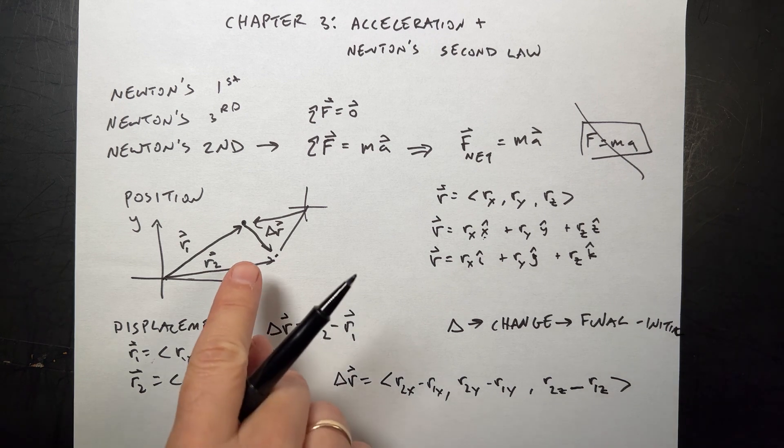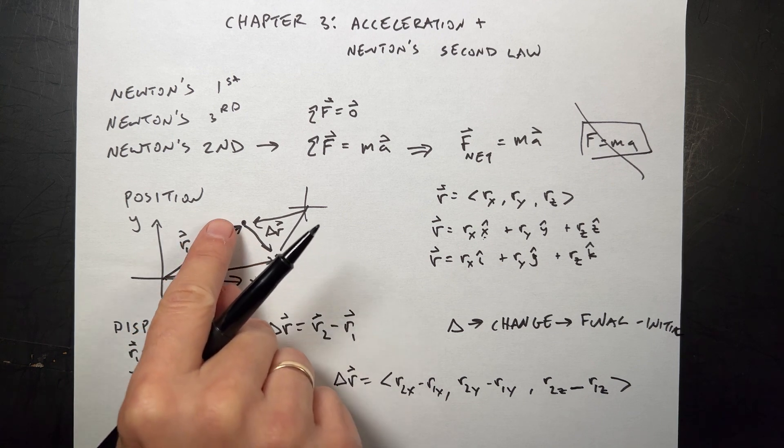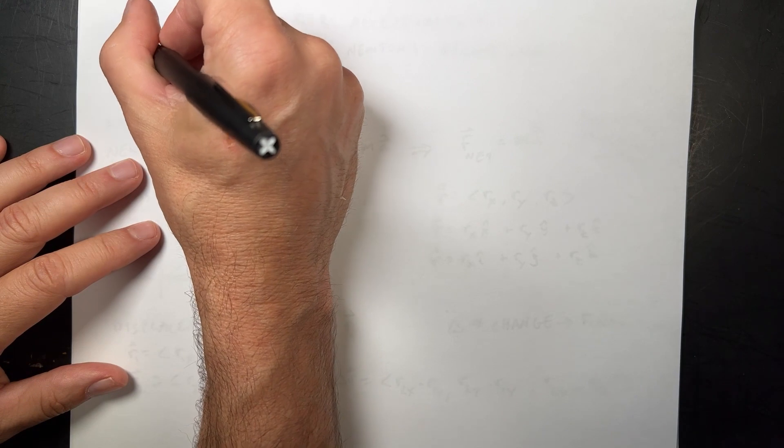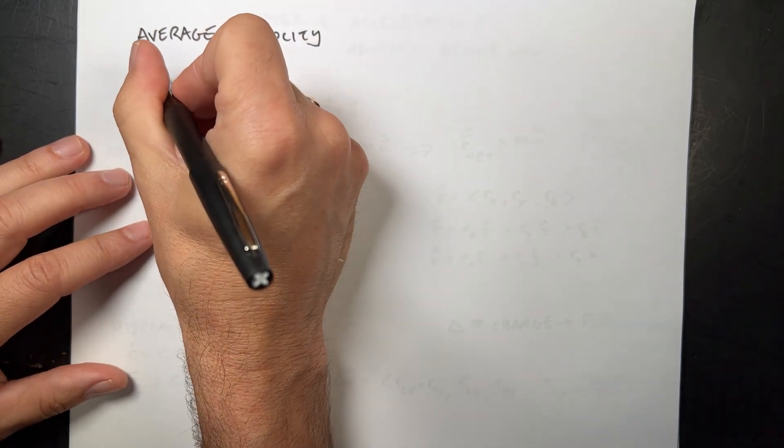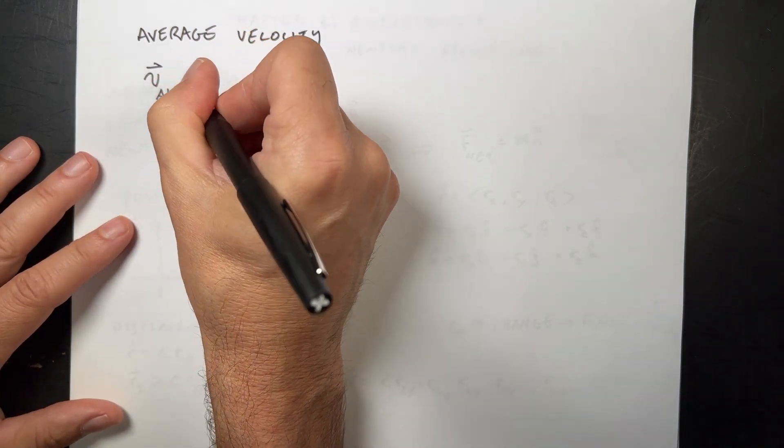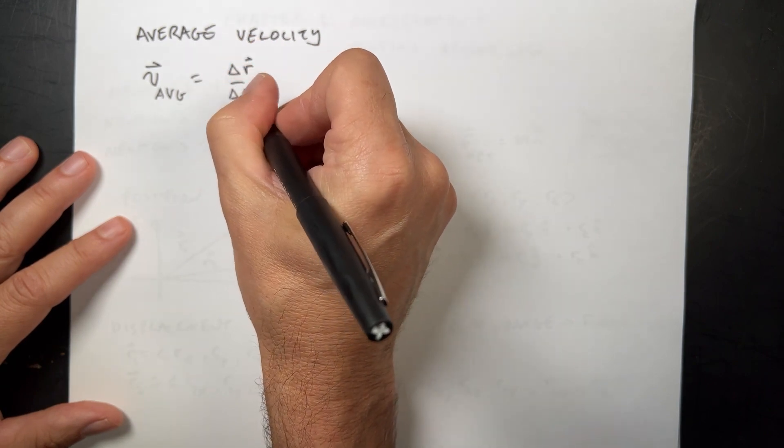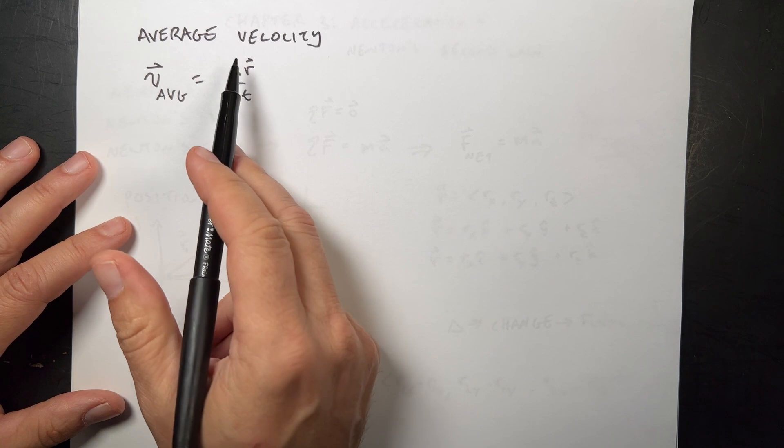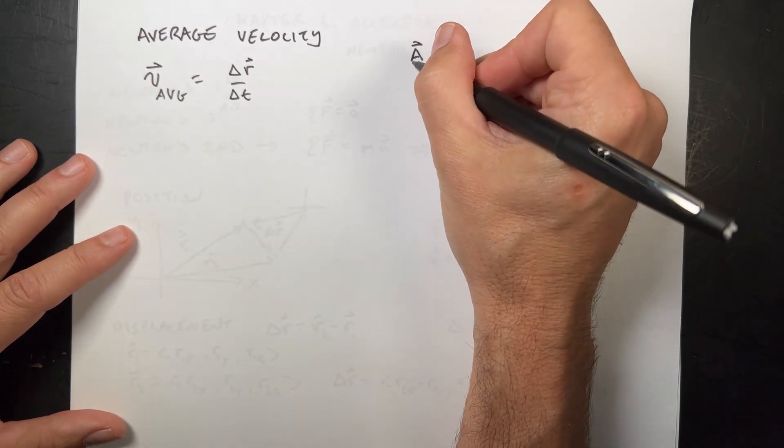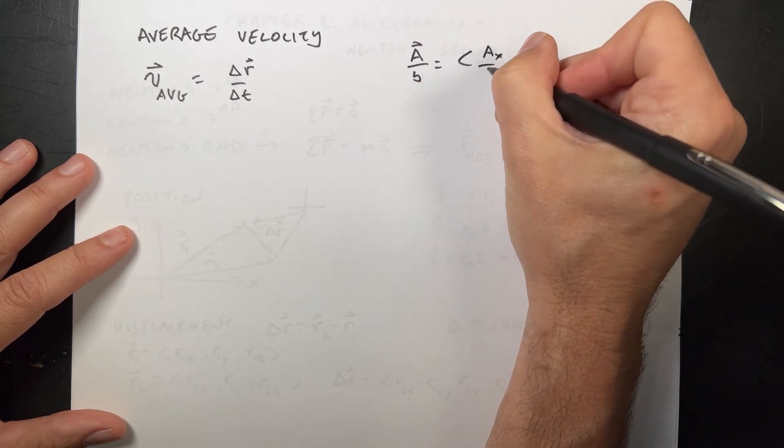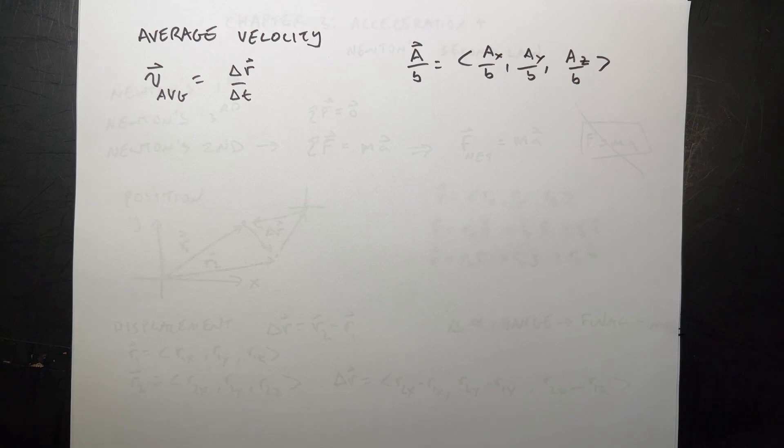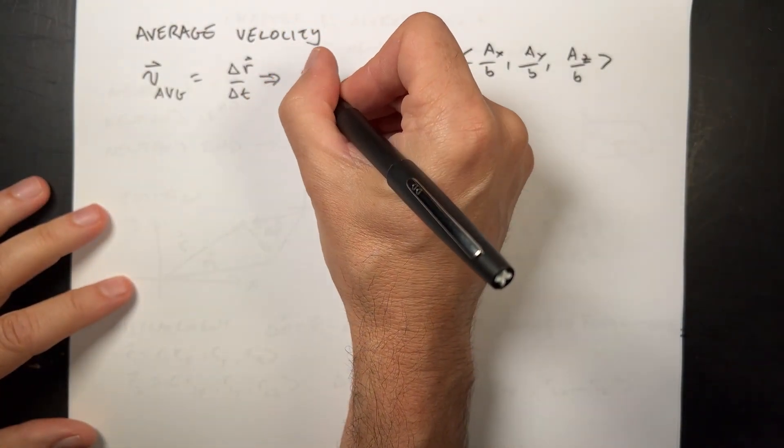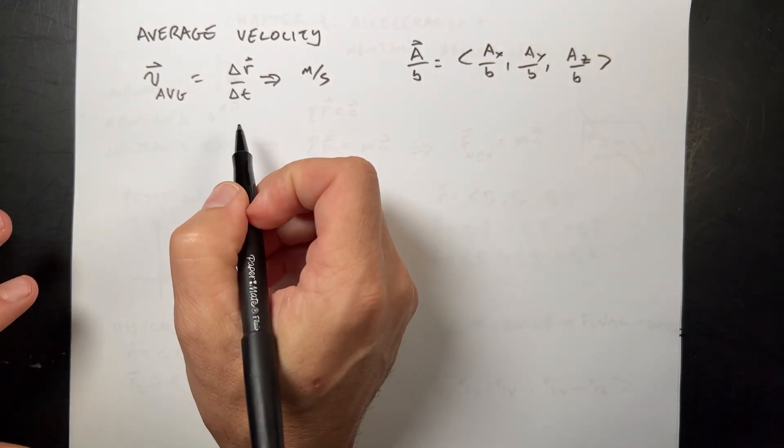Now we care about displacement because if I also measure the time it takes to move there from T1 to T2, and I get delta T, then I can define this as the average velocity. Average velocity, we write that as V average, and it's the change in position delta R over delta T. Delta T is a scalar, and we can divide a vector by a scalar. This will be in units of meters per second, because delta R is in meters, time is in seconds.